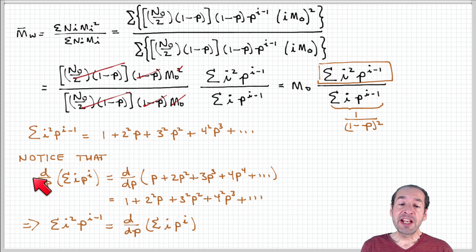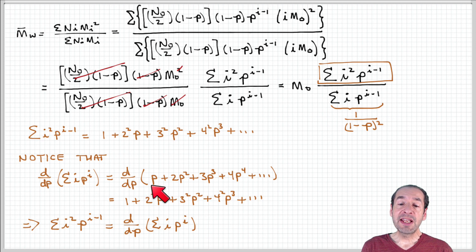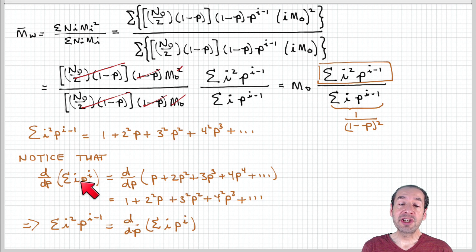Now let's see what happens when we take the derivative of the summation of i times p^i. Expanding this out: when i=1, we have 1·p^1, then 2p², then 3p³, then 4p⁴, and so on.